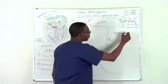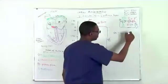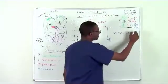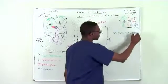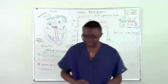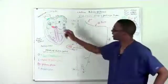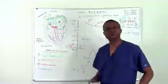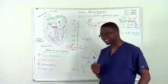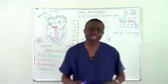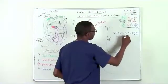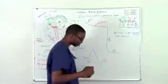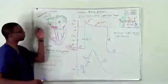The AV node depolarizes faster than the His bundle, which depolarizes faster than the Purkinje fibers. Now why am I mentioning this? This is because the SA node is what controls our heart rate. Yes, exactly. So what is our normal heart rate? Well, our normal heart rate is between 60 to 100 beats per minute. So when the SA node depolarizes...